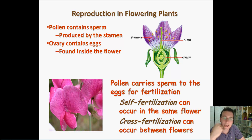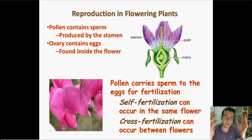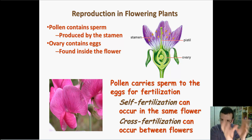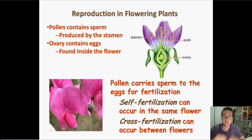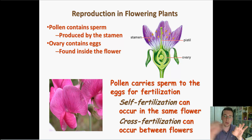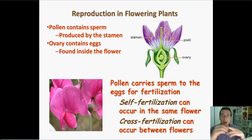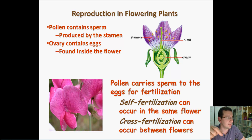Flowers that are incapable of having both genders in the same one — meaning the whole tree is only capable of one gender per flower — can only cross-fertilize, exchanging genetic code between flowers. However, if a flower has both genders in it, it can do something called self-fertilization.